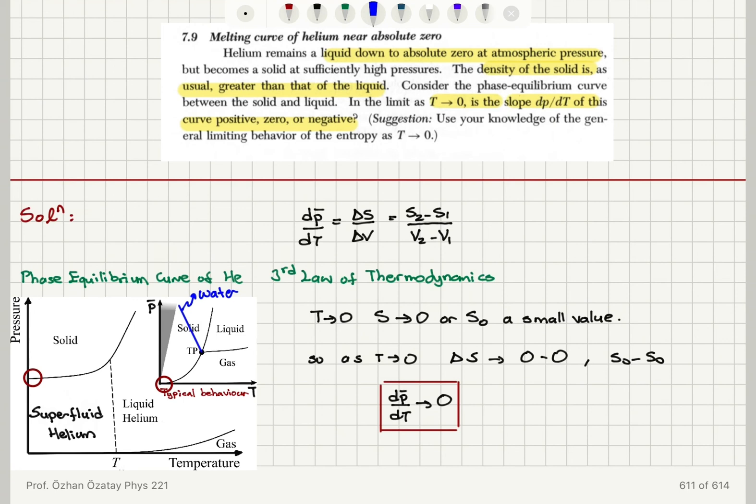the third law of thermodynamics states that the entropy must be approaching a constant value as T goes to zero, so the entropy change between the two phases will therefore approach a constant value.